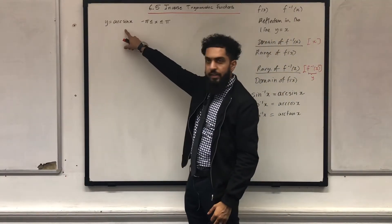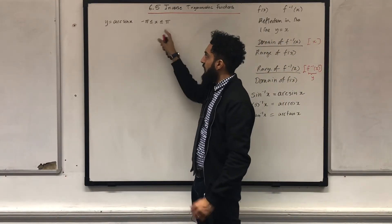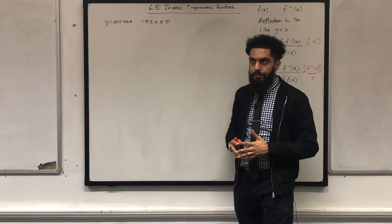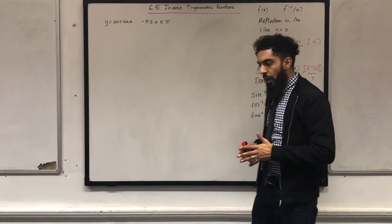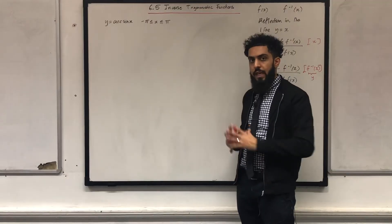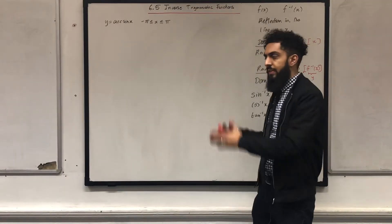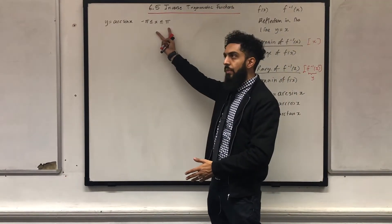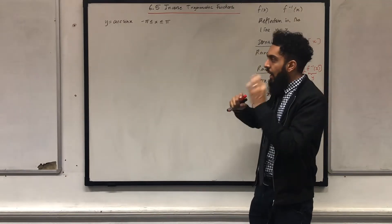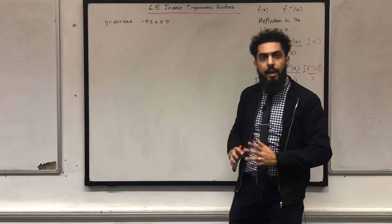I want to sketch y equals arcsin x for this particular interval. The question is, how do I do this? Well, I know that arcsin x is the inverse function of sine x. So if I sketch the graph of sine x for this particular interval and flip the domain and range, I will just get the graph of y equals arcsin x.